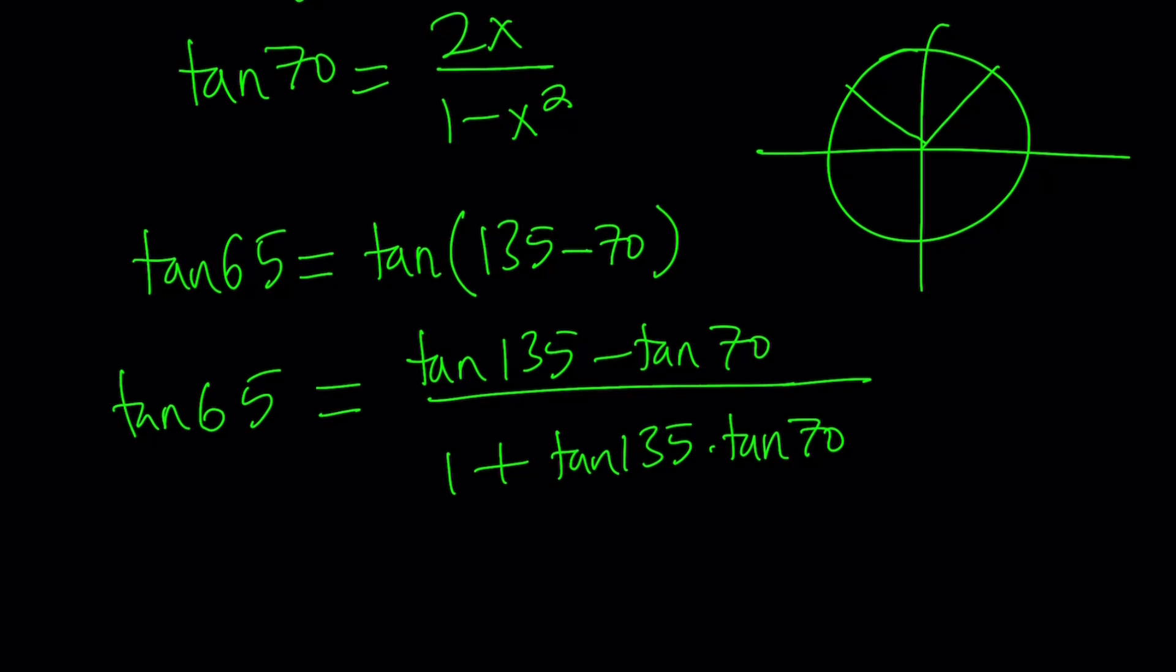And notice that 135 is in the second quadrant. Therefore, its tangent value is going to be negative. And tangent, you can kind of find from this axis, you know, you can expand it, extend it, whatever, and you'll get that it's negative 1. So, to keep a long story short, tangent 135 degrees is equal to negative 1.